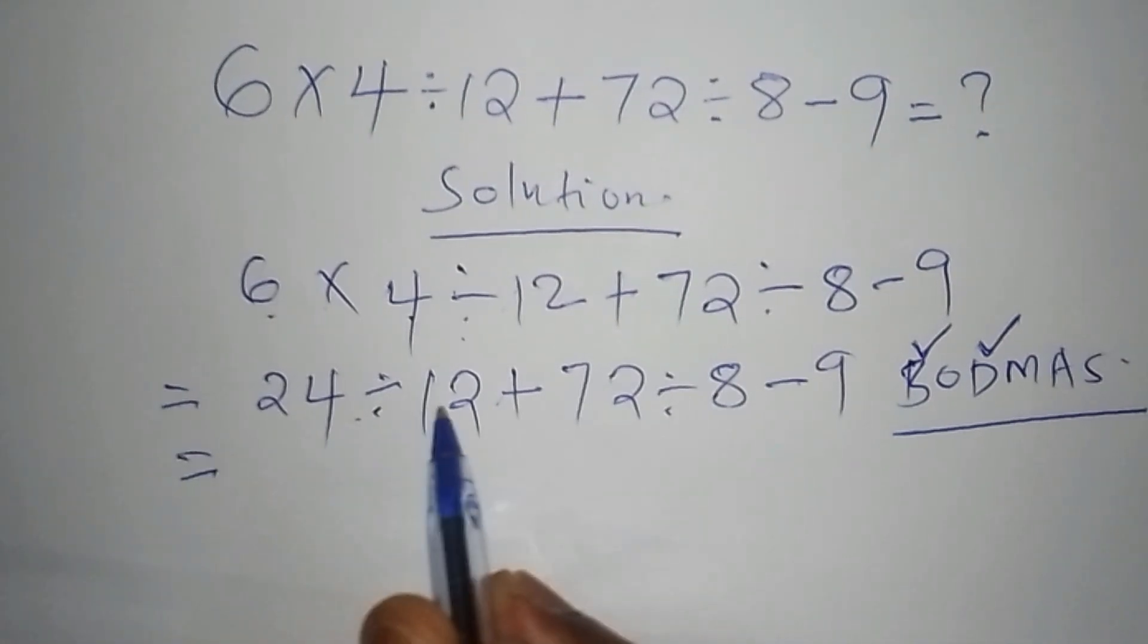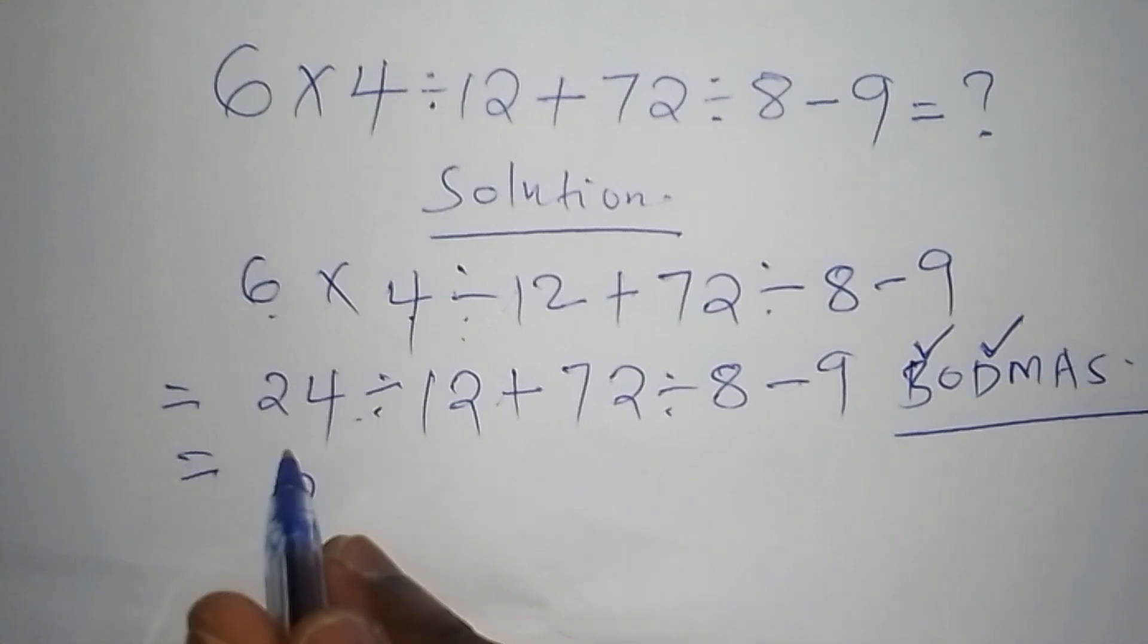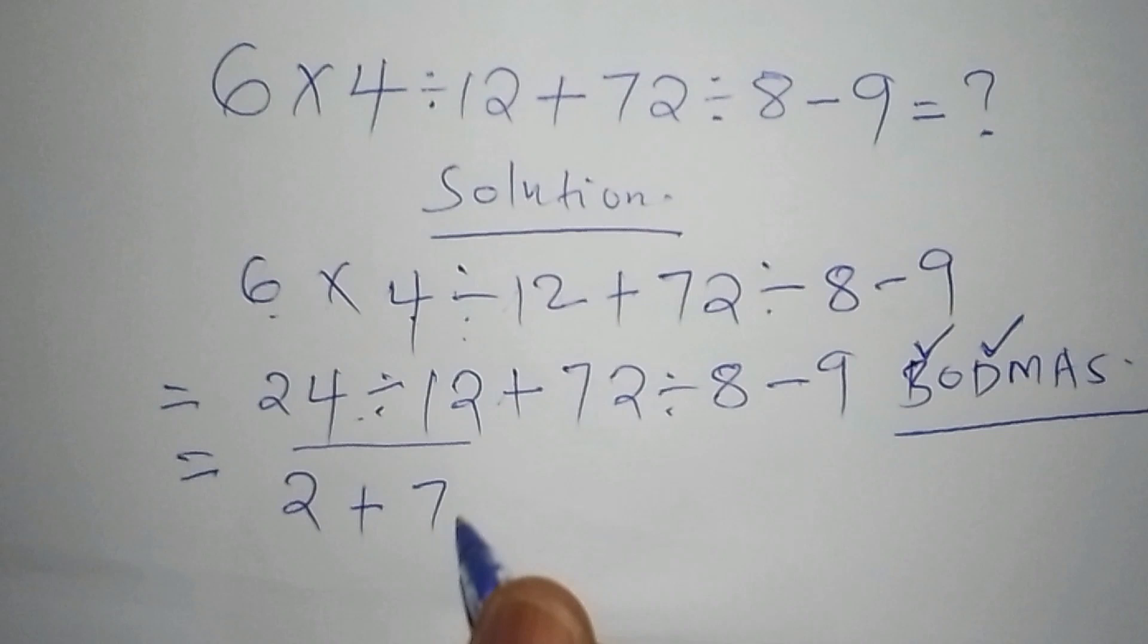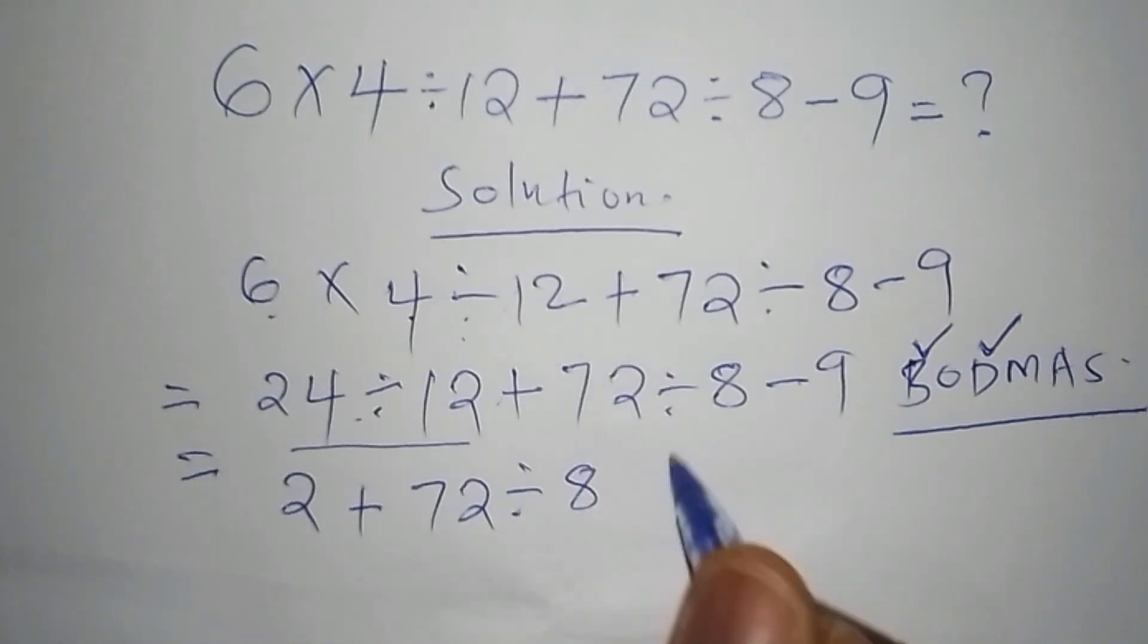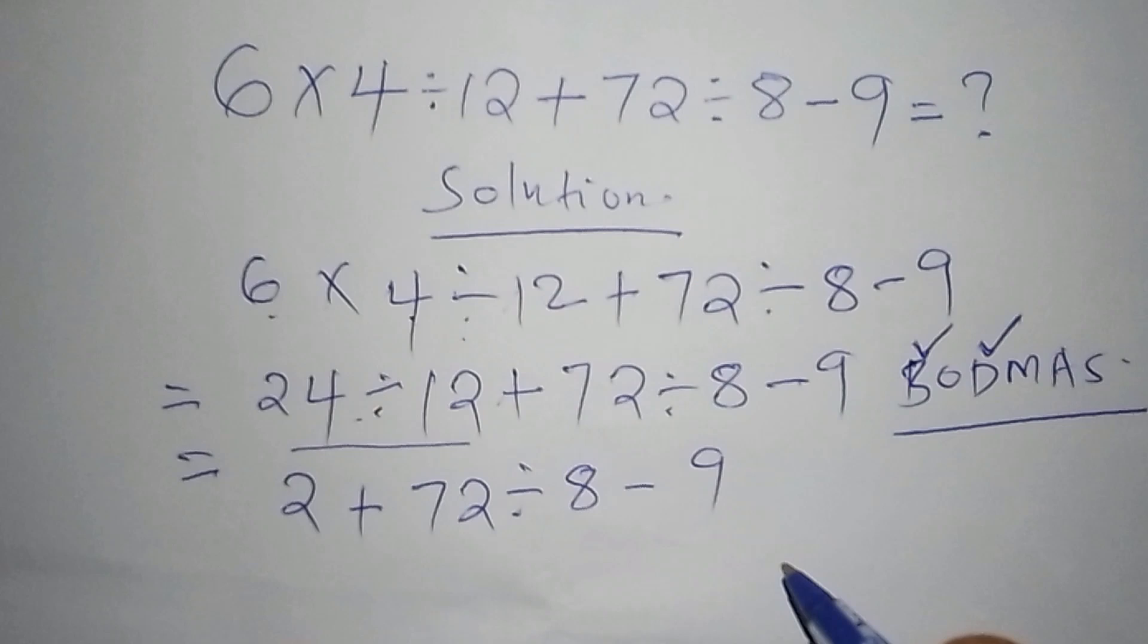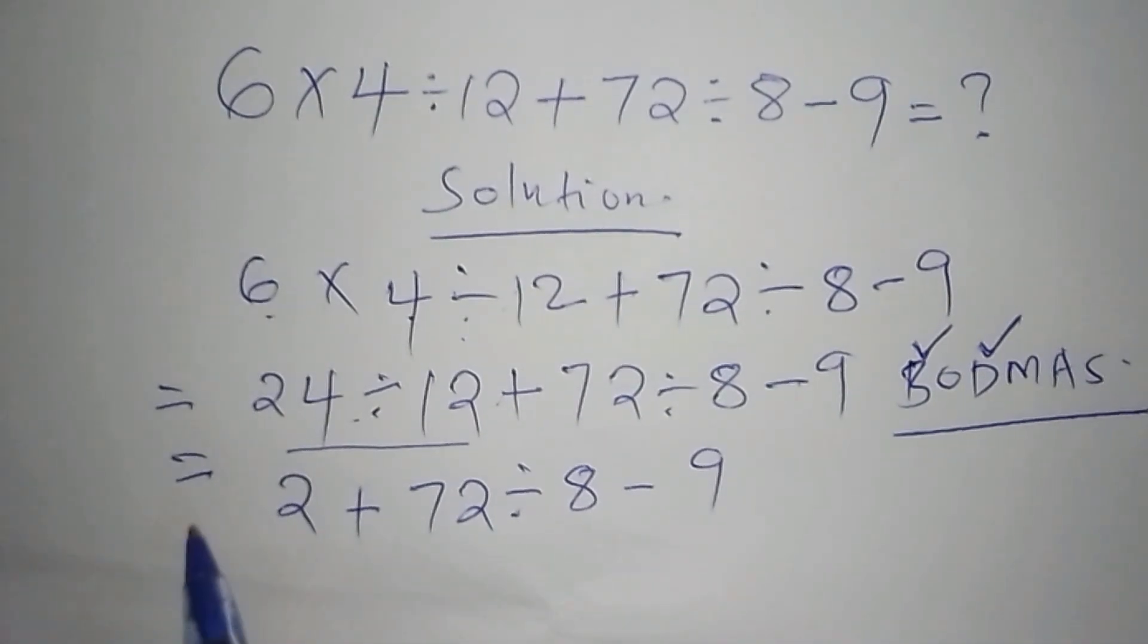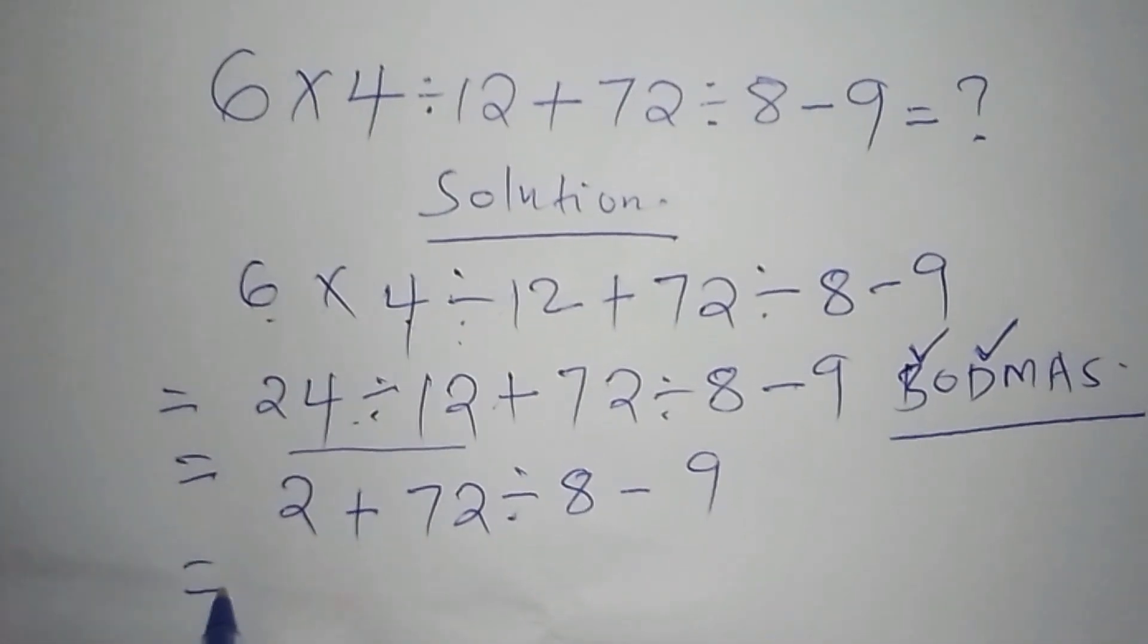Then here we have worked out all of this, so we shall have now 2 plus 72 divide by 8 minus 9. So that is our second step. So our third step now shall be, we have to work out 72 divided by 8.